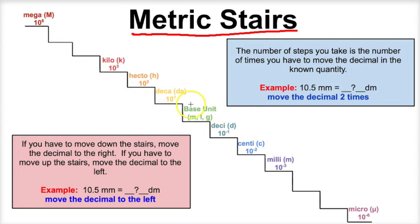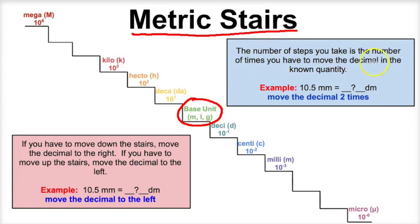So it's important that you memorize them. Right here we have base units: meters, liters, and grams. Here's how to do some SI unit or metric unit conversion using the metric stairs. The number of steps you take is the number of times you have to move the decimal in the known quantity.